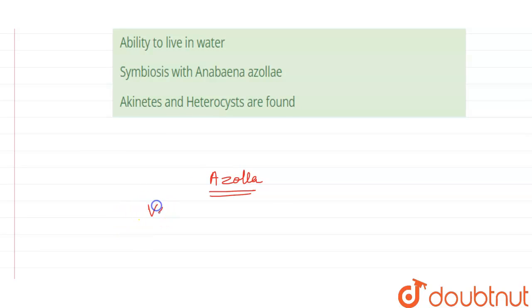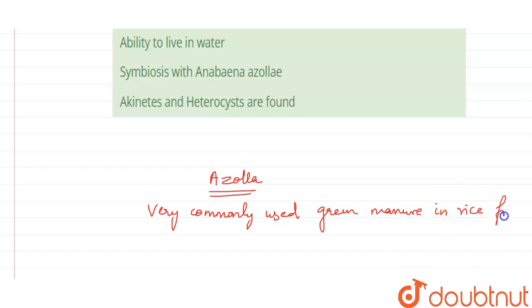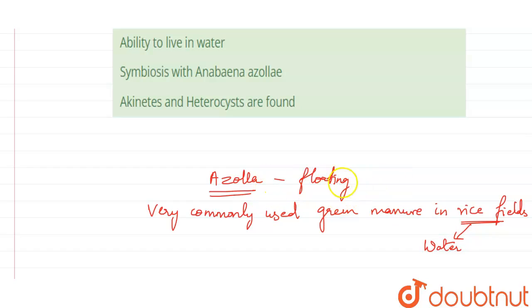Azolla is a very commonly used green manure in rice plants. Since it is used in rice fields, we can obviously find more water in it, so it will always be in a waterlogged condition as rice fields require more water. Hence we can find Azolla floating in water in general — that is how it is naturally present in the field. So since Azolla is itself a floating organism, there won't be any problem when we use it as a green manure in rice fields.